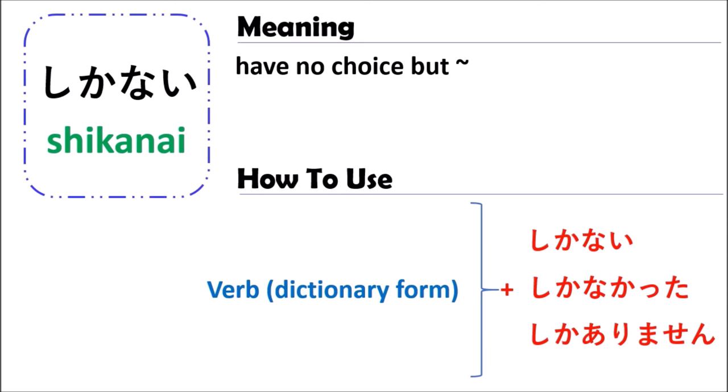So when you speak Japanese, be careful how and when to use each form. The meaning is that you have no choice and you have to do that thing — for example, you have to study or you cannot take another person to help you. To understand better, let's look at some examples together.